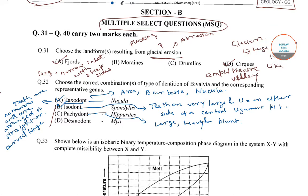The fourth dentition type is desmodont, in which the teeth are small and simple. Mya is an example of a genus with this type of dentition. The fourth combination is also correct. So in question 32, all four options are correct.